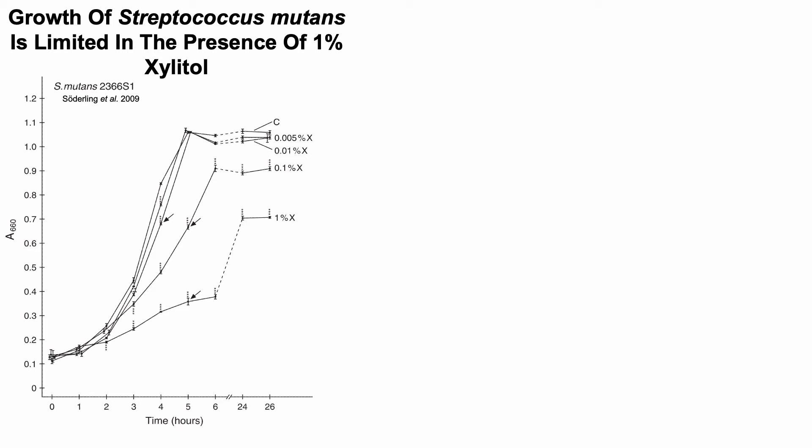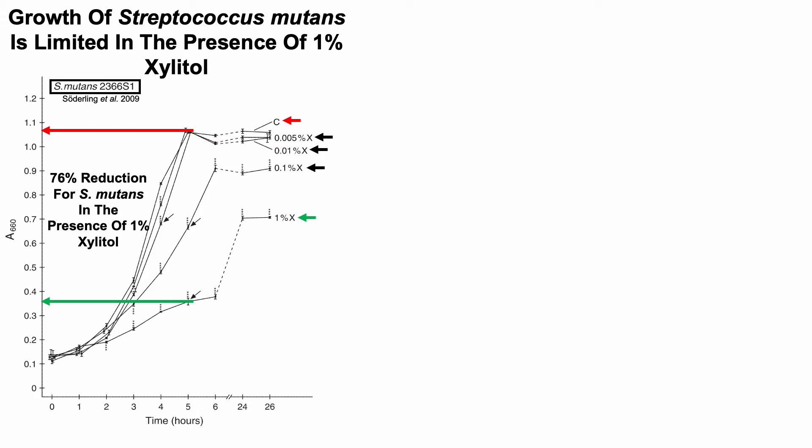The growth of Streptococcus mutans is limited in the presence of 1% xylitol. Looking at in vitro levels of S. mutans strain 2366 S1: the control had no xylitol, and with increasing xylitol concentrations, growth was reduced. At 1% xylitol — shown by the green arrow — there was a 76% reduction in Streptococcus mutans growth.